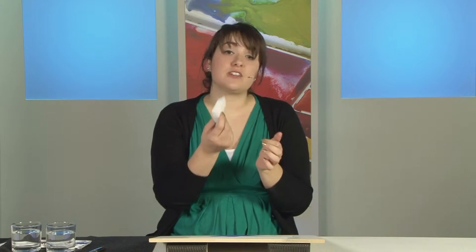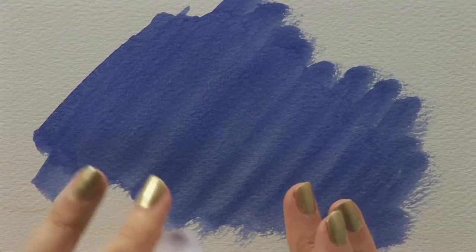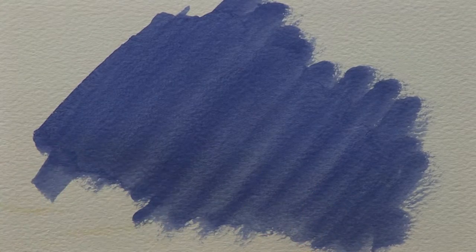Here I've got my magic sponge. I've cut it in half to make it a little smaller and easier to use. You can keep yours full-sized or cut it into as many pieces as you like. I'm going to use it now to lift the paint that I've got on this paper off.